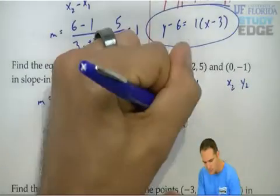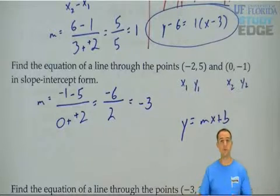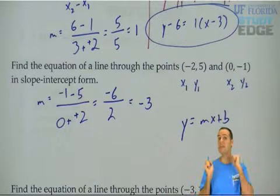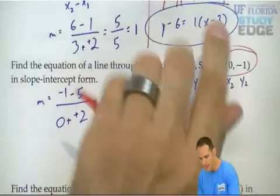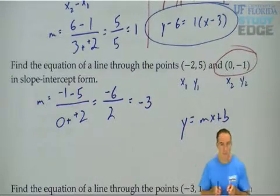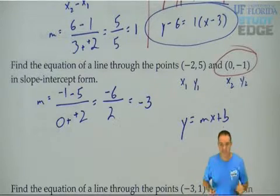But in this case, they want it in y equals mx plus b, which is slope intercept form. So you need the slope and the y-intercept, which if you notice, we have the y-intercept right here. Remember, a y-intercept is when x is 0, and there it is.